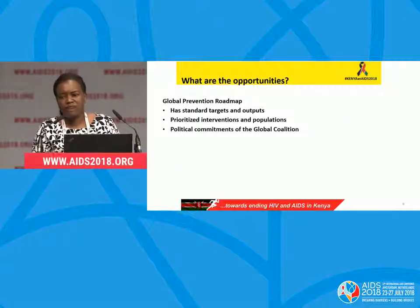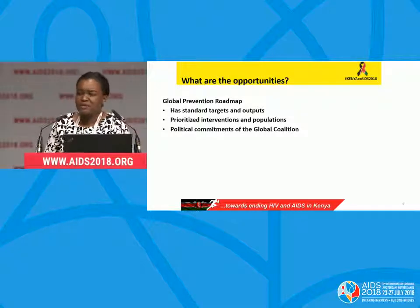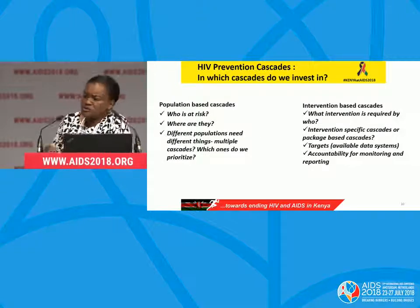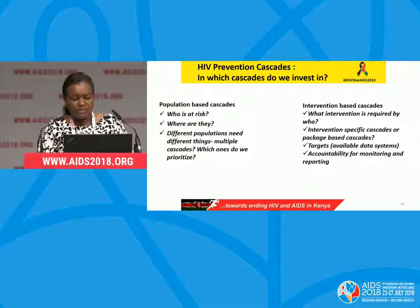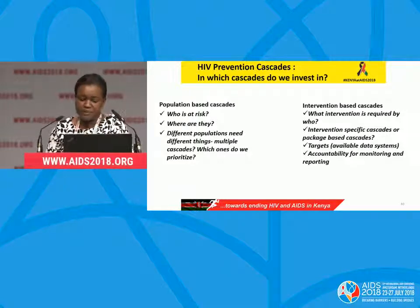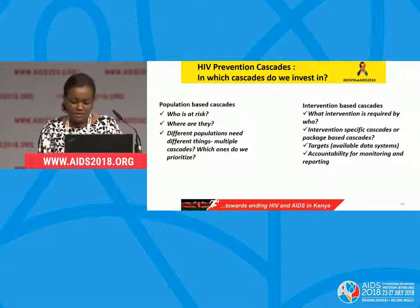What opportunities do we have? The global prevention roadmap — the 10-point action plan — has standard targets and outputs, prioritized populations and interventions within local context, and very high political commitment globally and at country level. Which cascades should we invest in? We can go population-based, asking who is at risk and where, recognizing different populations need different things. Or we can go the intervention-based cascade way — specific intervention cascades, package-based cascades. We also need to look at what targets and data systems are available for accountability, monitoring, and reporting.